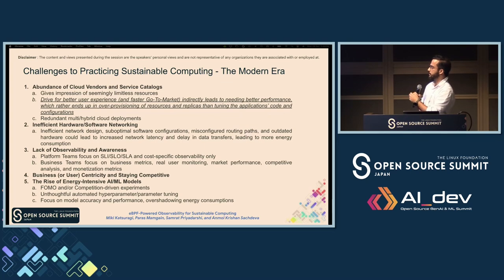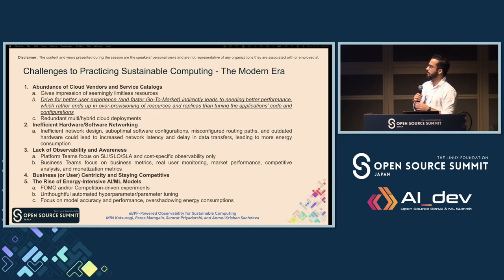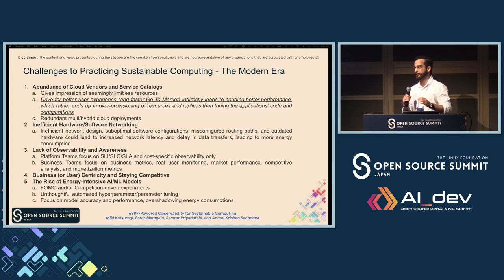Even though we have the first and second challenges covered, the third point emphasizes the lack of observability and awareness — even though we have metrics, we are not utilizing them at their best. Sometimes we may have observability, but we are often emphasizing only on the SLA and SLI of specific products and services, while ignoring other metrics. There's a closed set of rules we follow and we are not looking into other metrics we could actually leverage.